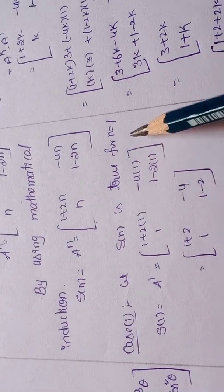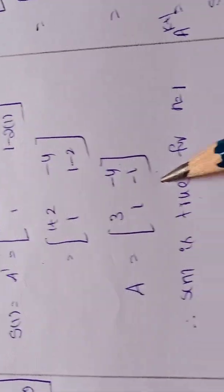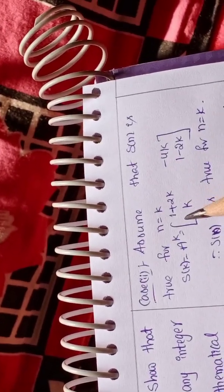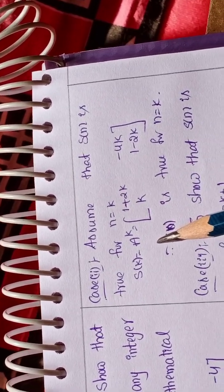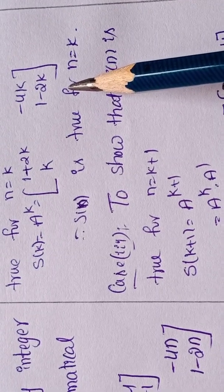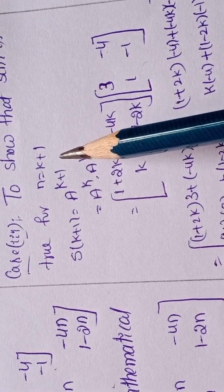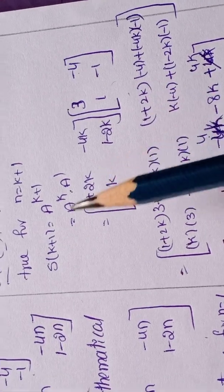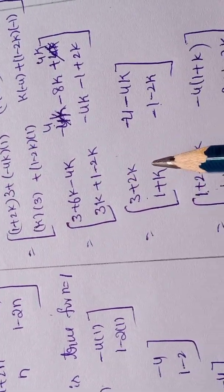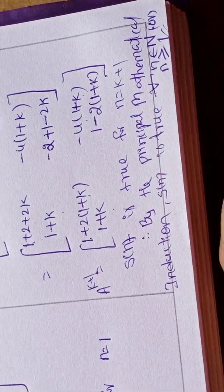Case 1: let S of n be true for n equal to 1. S of 1 — substitute in the place of n, 1. S of n is true for n equal to 1. Case 2: assume S of n is true for n equal to k. S of k equal to A power k equal to [1+2k, -4k; k, 1-2k]. S of n is true for n equal to k. Case 3: we show in the place of n, k plus 1. Same process — if the bases are same, powers are added. Thank you to all.